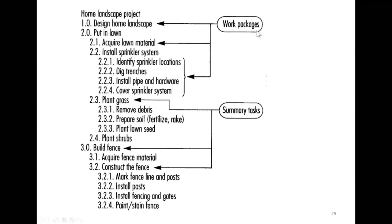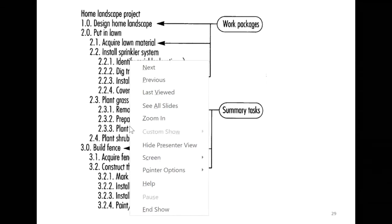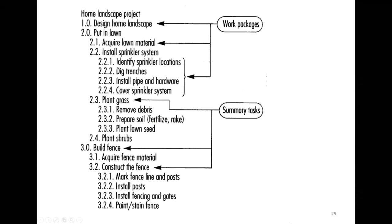Work Breakdown Structure is the initial tool. Before starting work, even for a simple project like home landscaping, you can break it into key tasks. The top-level task is often referred to as a summary task with further breakdown. In our work package, summary tasks include getting the design, landscaping, putting in the lawn — and within that there are sub-tasks — and building the fence. We start planning by looking at higher-level activities.